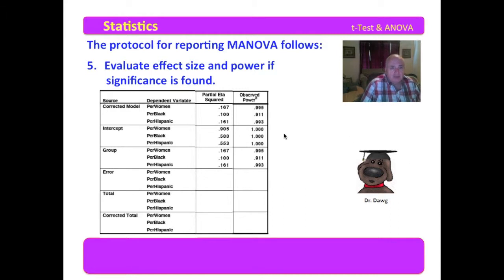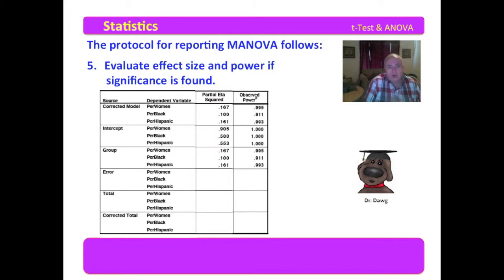We also need to discuss the effect size and the power. If significance is found in our corrected model, the effect size for the percent of women and the percent Hispanic is large; the effect size for the percent of black is moderate. The power is downright respectable: 0.995, 0.911, and 0.993. So what we conducted was indeed a very powerful test.